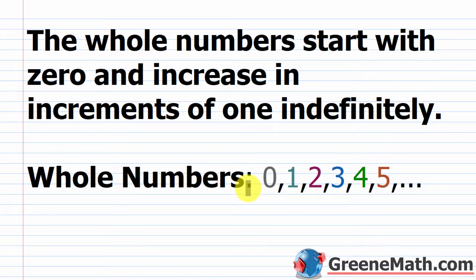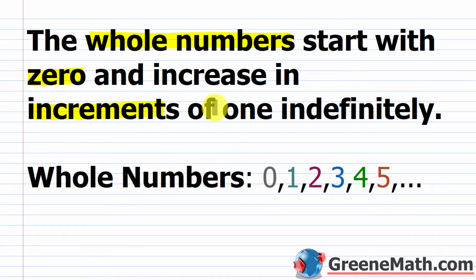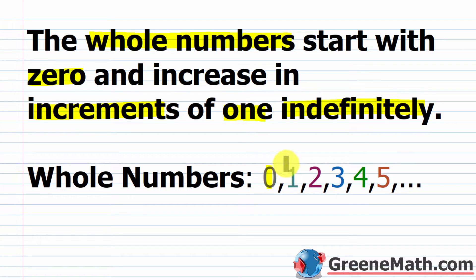Let's start out by talking about the whole numbers. The whole numbers start with zero — that's your smallest whole number — and then increase in increments of one indefinitely. I've written the whole numbers here and listed zero, the smallest whole number, first, in the leftmost position. Then you put a comma and add one to zero to get to one, so you put your next largest whole number there.